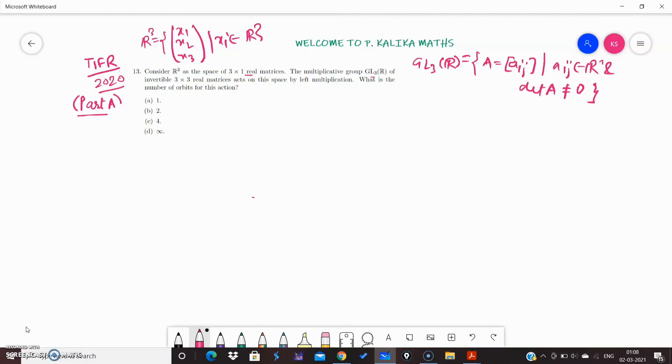The question says the multiplicative group GL₃(R) of these real matrices is acting on the space, that means acting on R³ by left multiplication. So basically they are defining a group action. If G is GL₃(R) and S is R³, then they define group action by A: if A belongs to G and X belongs to S, this is just left multiplication by A. This is matrix multiplication - a 3×3 matrix and a 3×1 matrix. This is a well-defined map and it's easy to check that this is a group action.